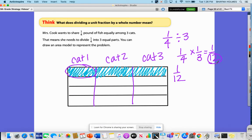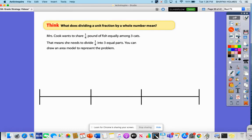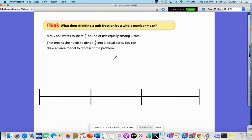Let's look at the same problem, but let's look at another model to do it. Here I have the same problem: 1/4 pound of fish dividing equally among three cats. So here I have my three cats. What I'm going to do is divide these sections into fourths.